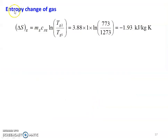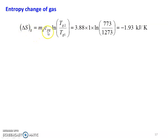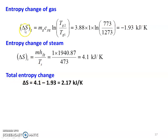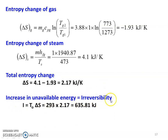Entropy change of gas: delta SG equal to MG into CPG into ln(TG2/TG1). With MG equal to 3.88, CPG equal to 1, ln(773/1273) equal to minus 1.93 kJ per kelvin. Entropy change of steam: delta S steam equal to mass of steam into HFG divided by TS: 1 into 1040.87 divided by 473 equal to 4.1 kJ per kelvin. Total entropy change: delta SG plus delta S steam equal to minus 1.93 plus 4.1 equal to 2.17 kJ per kelvin. Increase in unavailable energy, which equals irreversibility: I equal to TO into total delta S: 293 into 2.17 equal to 635.81 kJ.